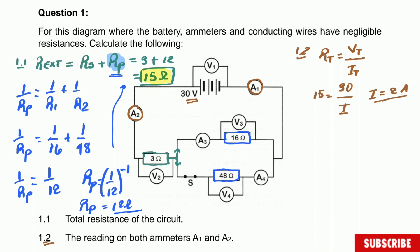So the current is equal to 2 amperes. Notice it is the same current for A1 and A2, because the current is constant throughout the circuit — even through the whole parallel part it is also 2 amperes. We'll write 2 amperes at both positions on the circuit diagram. That's question 1.2, quite simple.